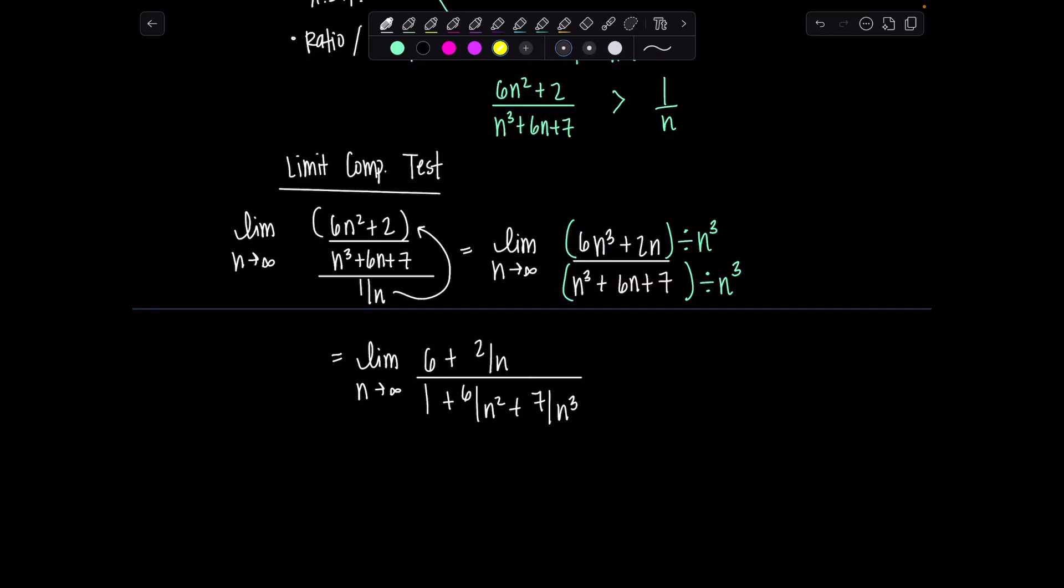And then 1 plus 6 over n squared plus 7 over n cubed in the denominator. Did I say denominator when I meant numerator earlier? Forgive me if I misspoke. Then we can see 2 over n is going to go to 0. 6 over n squared goes to 0. So does 7 over n cubed. And I'm left with 6 over 1, which is 6.